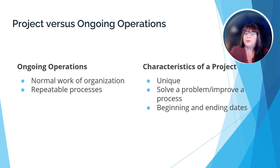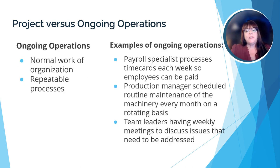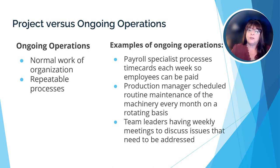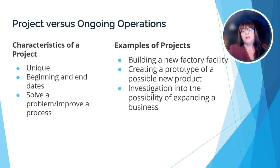Many students and managers struggle with understanding the difference between a project and ongoing operations. Let's take a look at the characteristics of both, then look at a few examples. When we talk about ongoing operations, we mean the daily activities that must be done on a regular basis — they tend to be repeated in the same sequence over and over. Some examples include a payroll specialist who processes time cards each week so that employees can be paid, a production manager who schedules routine maintenance of machinery every month, or a team leader having weekly meetings to discuss issues that need to be addressed. Now, some general characteristics of projects include that a project is unique, meaning it's something different that the organization has not done before.